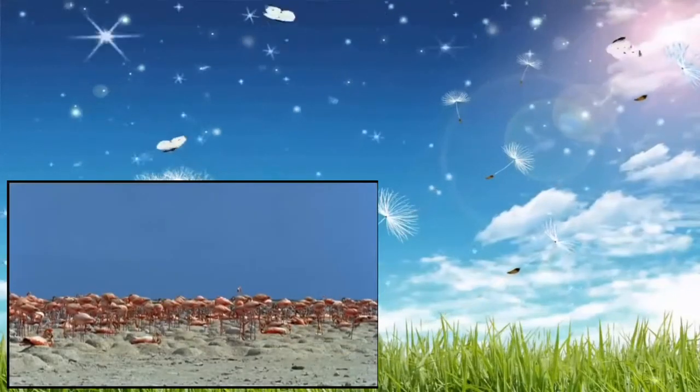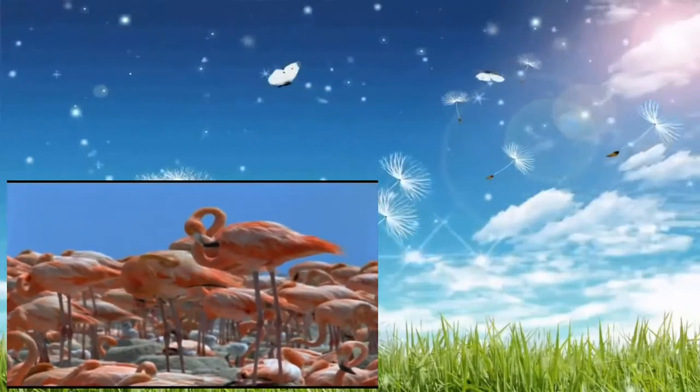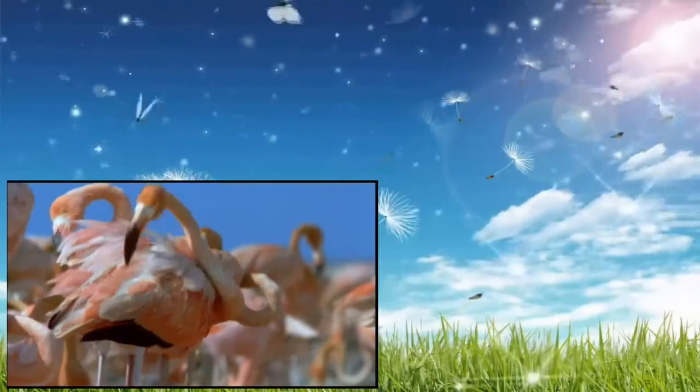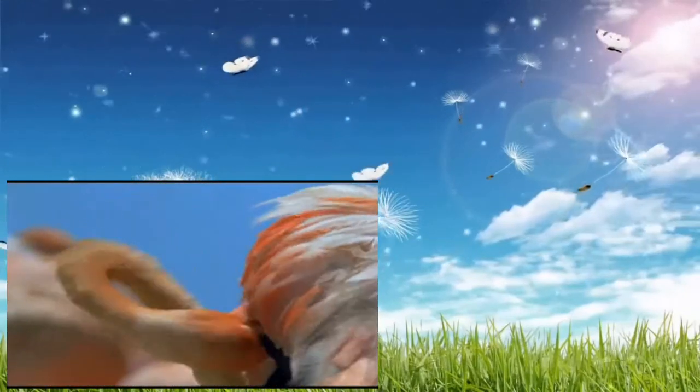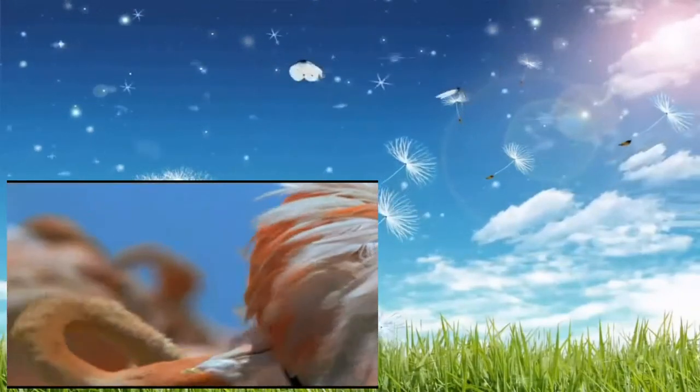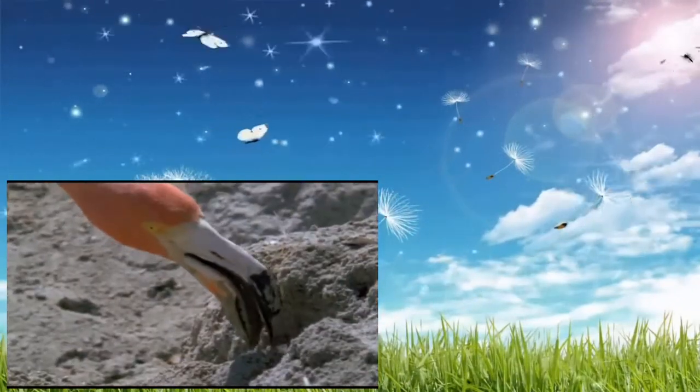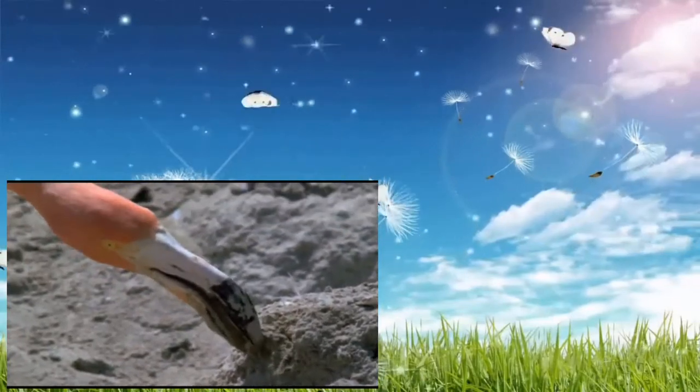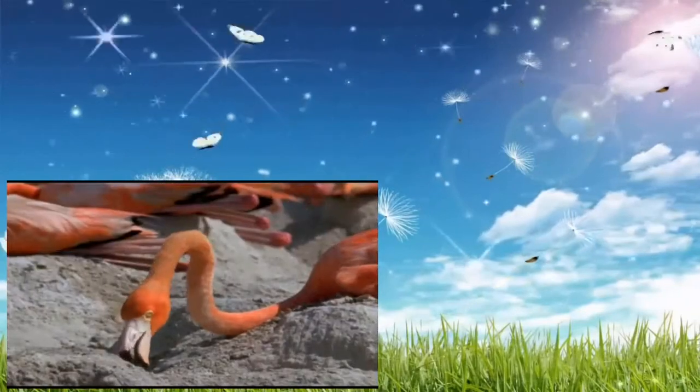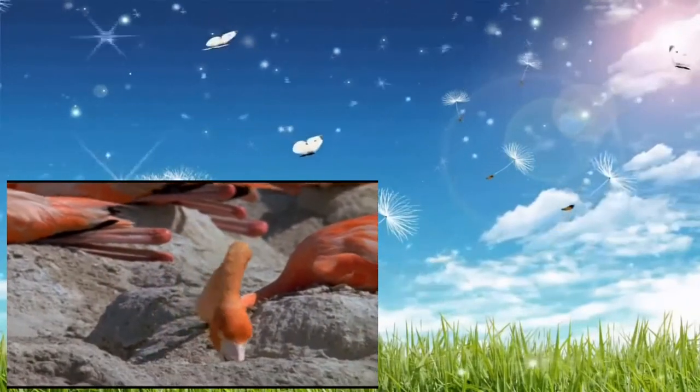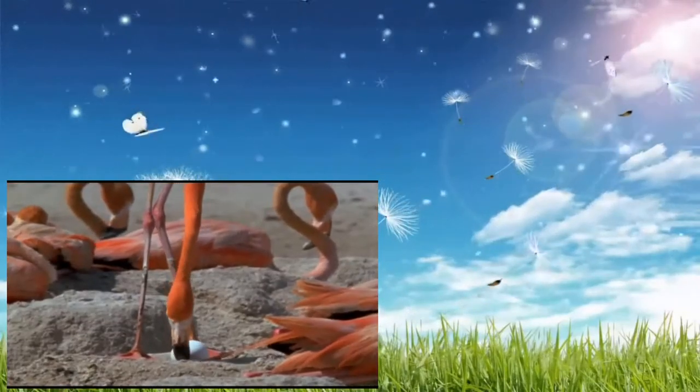Each year, around 20,000 flamingos fly in from South America to these remote salt ponds to feed and breed. The lack of both people and predators makes it a good place for raising chicks. It can take several days to build a nest from this hard, salty mud, and it takes constant care to stop their single egg from rolling off.